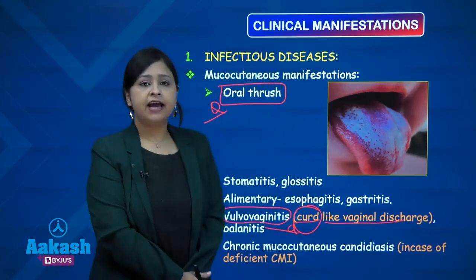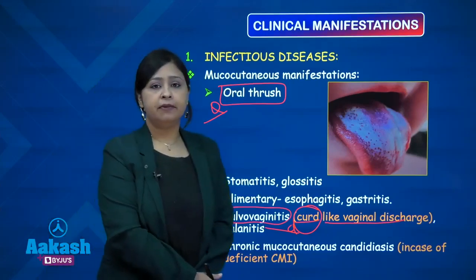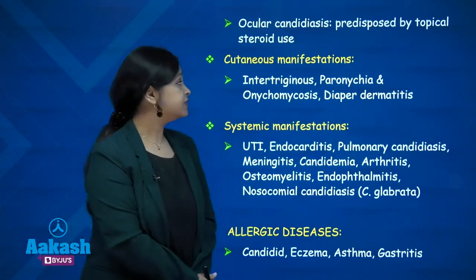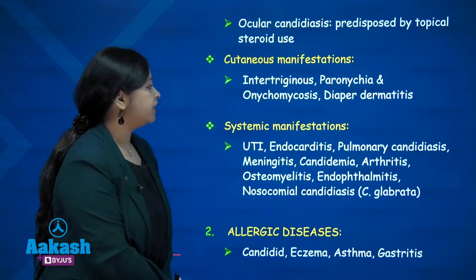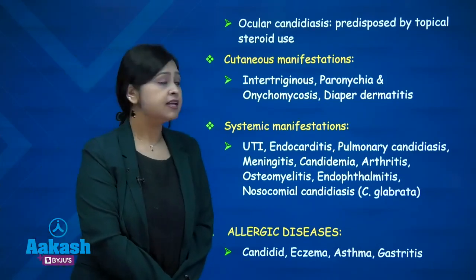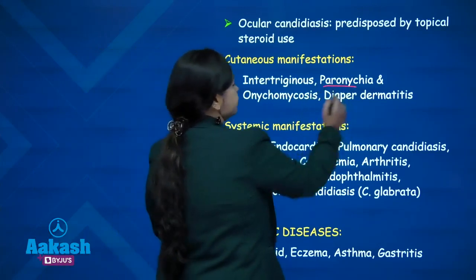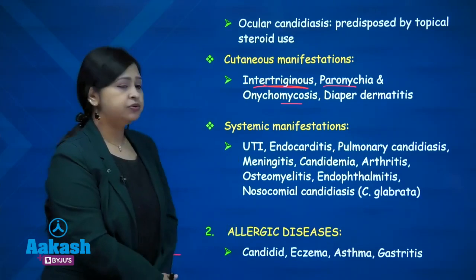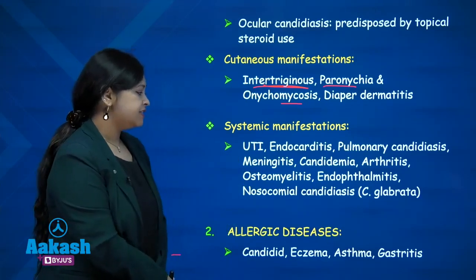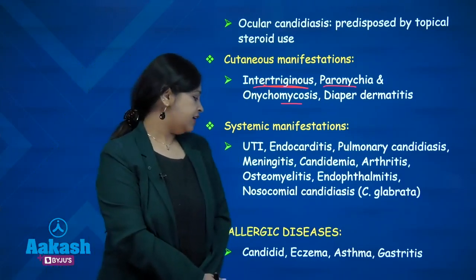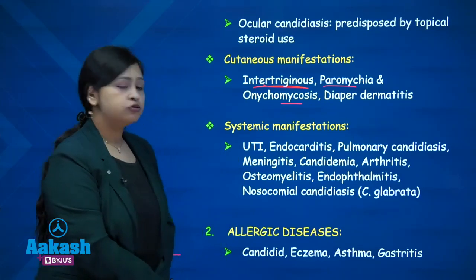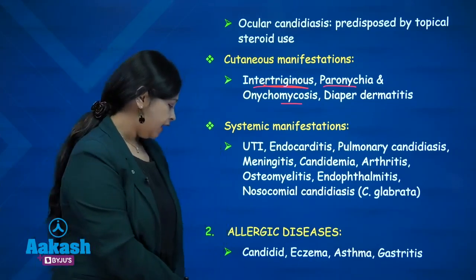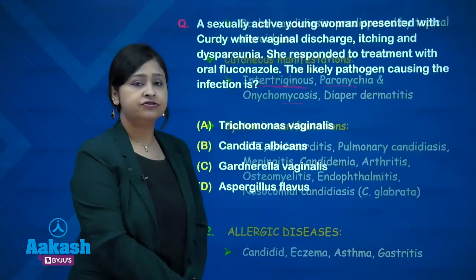Chronic mucocutaneous candidiasis occurs in patients with deficient cell-mediated immunity. Ocular candidiasis occurs when the patient is given topical steroids. Cutaneous manifestations occur in the form of intertrigo, paronychia, onychomycosis, and diaper dermatitis — infections of the nails and skin folds. Systemic manifestations occur as UTI, endocarditis, pulmonary candidiasis, meningitis, candidemia, arthritis, osteomyelitis, endophthalmitis, and nosocomial candidiasis. Allergic manifestations occur due to the metabolites of Candida and present as candidids, eczema, asthma, and gastritis.